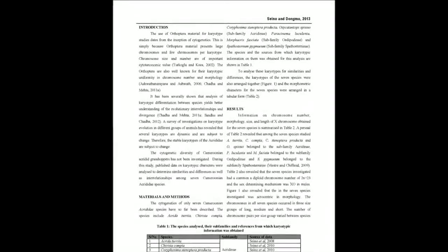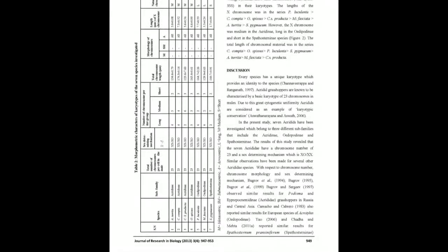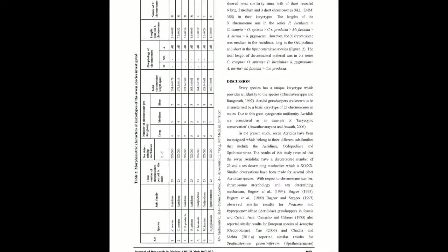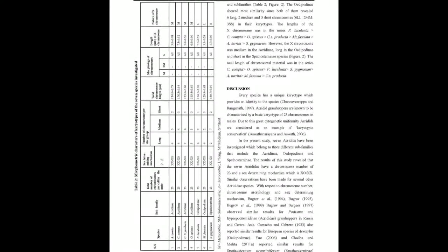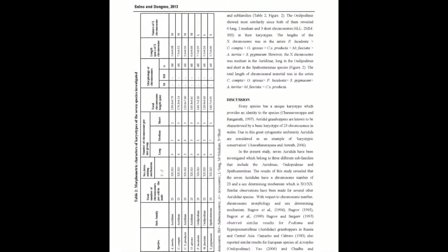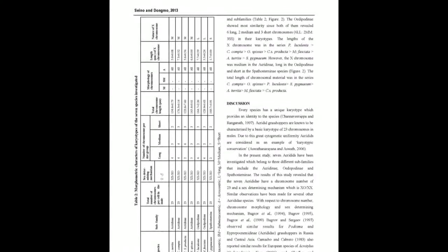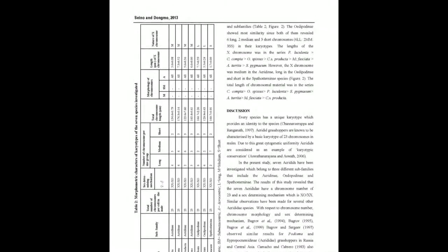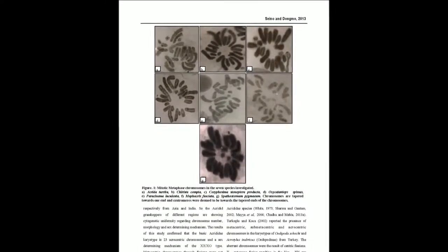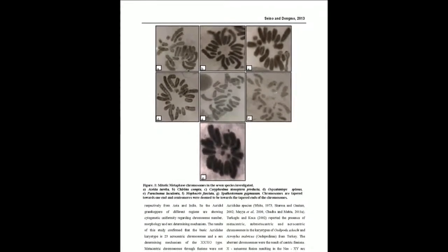Karyotype and meiosis relationships among these species were analyzed from published data. The species had a common karyotype made up of 23 acrocentric chromosomes in males. The sex mechanism in all seven species was XO, and meiosis was normal and chiasmate. The chromosomes occurred in three size groups: long, medium, and short.